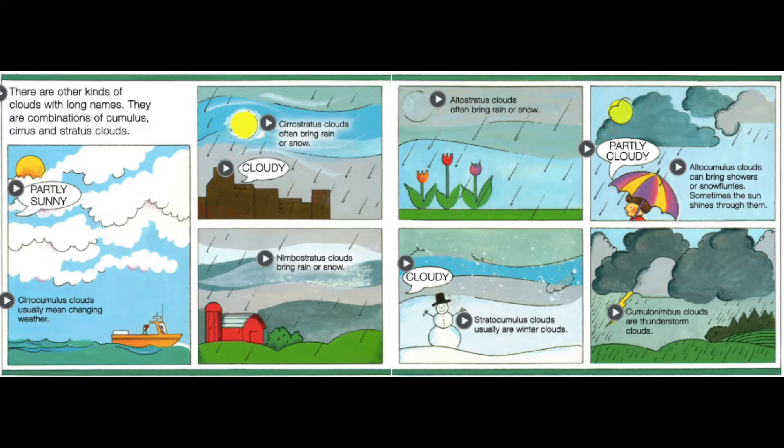Cirrostratus clouds are usually winter clouds and can bring showers or snow flurries — sometimes the sun shines through them. Cumulonimbus clouds are thunderstorm clouds.